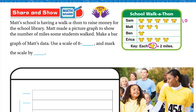Reading the picture graph: Matt has two full symbols plus half a symbol — half of two is one — so Matt walked 5 miles. Ben has two symbols, so Ben walked 2 miles. Erica has symbols worth 2, 4, 6, 8 — so Erica walked 8 miles. The smallest value is 2 and the biggest is 10.